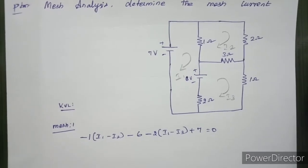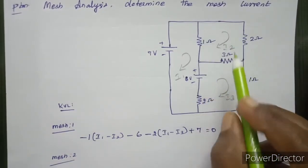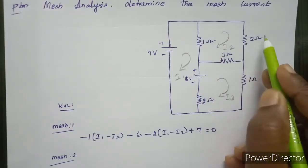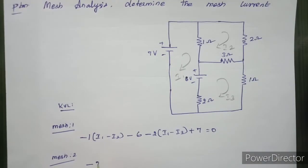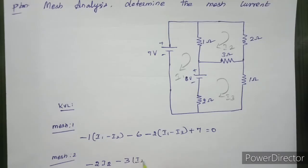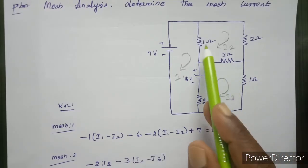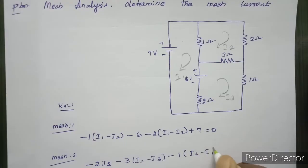For the second mesh equation, the 2 ohm resistor is not shared, so we use 2 into I2. There is also a 3 ohm resistor. We use I2 minus I3 for the shared resistance. So the second mesh equation is formed.